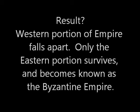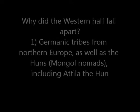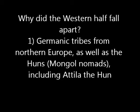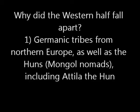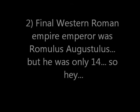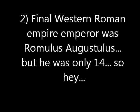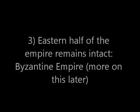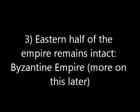To summarize, why did the western empire fall apart? When we talk about the fall of Rome, we're referring to that western portion of the empire falling apart. Germanic tribes from northern Europe invaded, including a group of Mongol nomads called the Huns, with invasion after invasion by the famous Attila the Hun. The final western Roman emperor was a 14-year-old boy named Romulus Augustulus — and 14-year-olds aren't known for their ability to hold people together. So the empire completely fell apart. The eastern half of the Roman Empire survived and flourished, eventually becoming the Byzantine Empire, which we'll talk about extensively next unit.